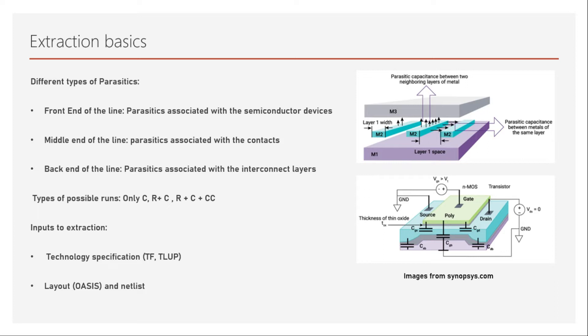The third type is Back End of the Line (BEOL) parasitics, associated with interconnect layers — the actual metal layers. These are extracted as part of BEOL parasitic extraction. There are also different configuration modes in which extraction can run.